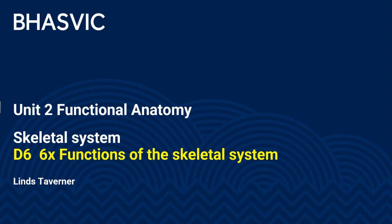This BTEC Sport and Exercise Science video is for Unit 2 Functional Anatomy. We are looking at the skeletal system and this should be the last video relating to this system. It's for D6 and it looks at the six functions of the skeletal system. We've actually covered them all through the other topics, so this isn't new knowledge — it's just drawing it together and relating it to the job of the skeletal system as a whole.